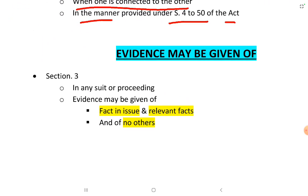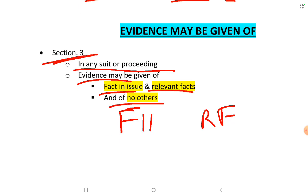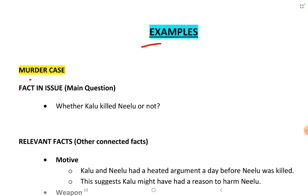Section 3 of the Bharatiya Sakshya Adhiniyam states that in any suit or proceeding, evidence may be given of fact in issue or relevant facts, and of no others. So only evidence relating to fact in issue or relevant facts is admissible — any other type of fact will not be admitted by the court.